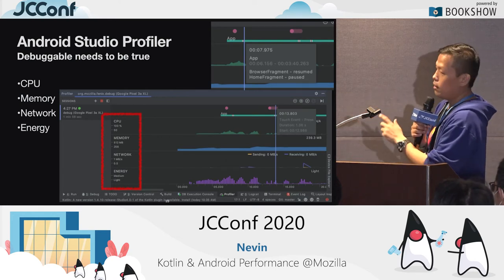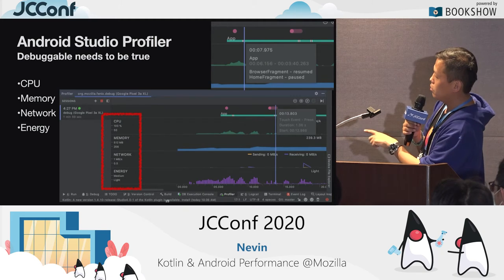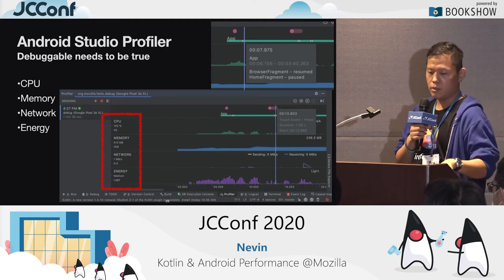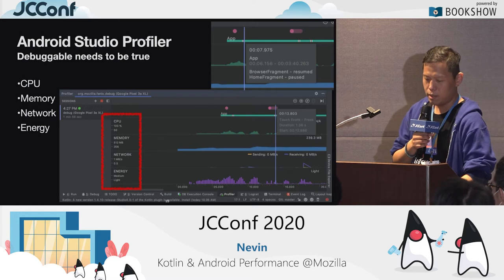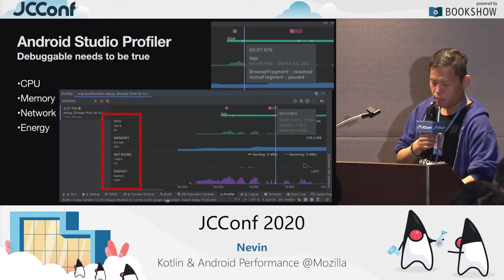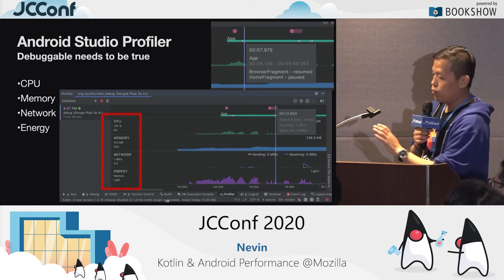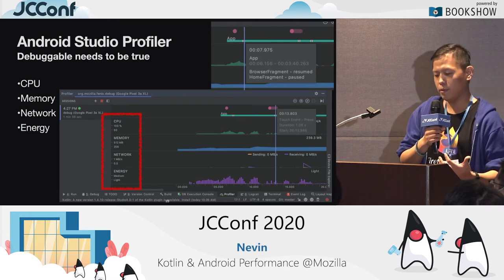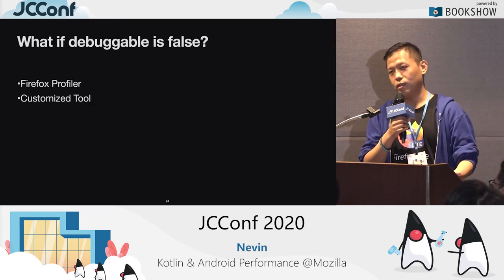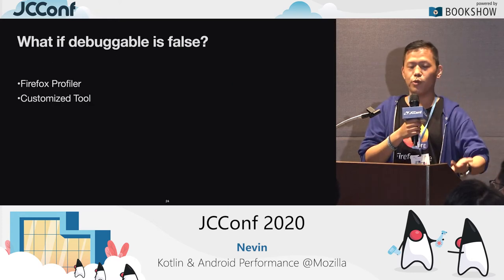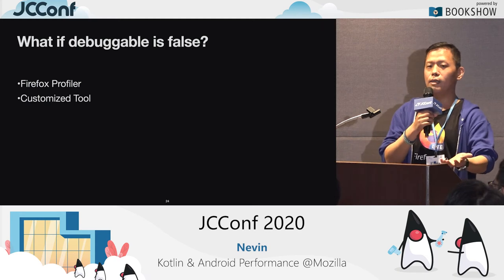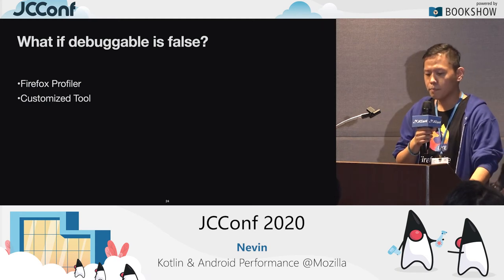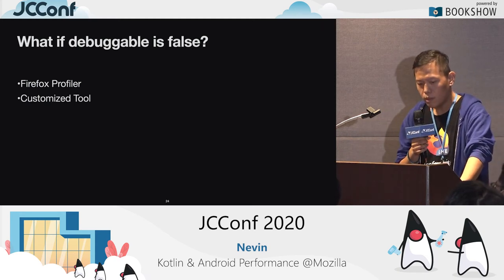Recently, energy profiling was added too. If you want to profile with debugger set to false — like a release version — you can build your release version using your customized debug keystore.